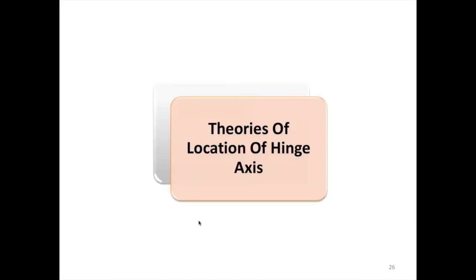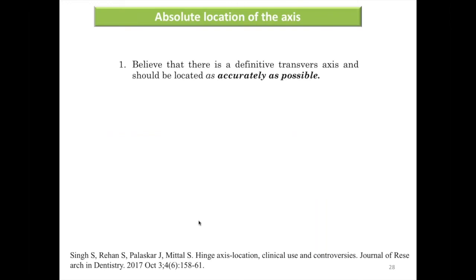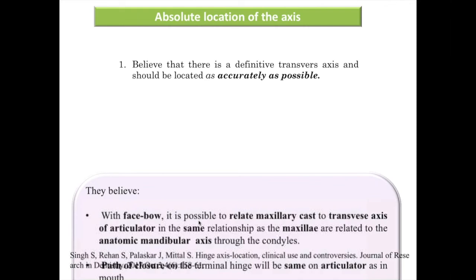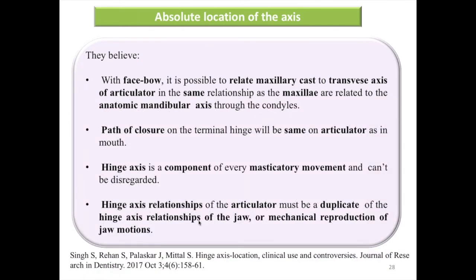There are four schools of thought regarding the location of the hinge axis: absolute location of the axis, the arbitrary axis, non-believers, and the split hinge axis. Absolute location believers hold that there is a definitive transverse axis that should be located as accurately as possible, and that using a face-bow it is possible to relate the maxillary cast to the transverse axis of the articulator in the same relationship as the maxilla to the anatomic mandibular axis. The path of closure on the terminal hinge will be the same on the articulator as in the mouth, and the hinge axis of the articulator must duplicate the hinge axis relation of the jaw.